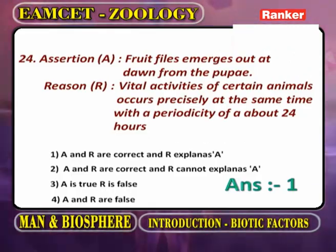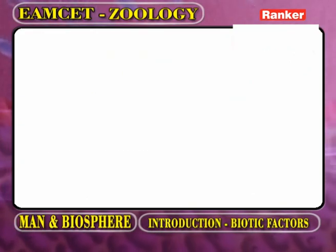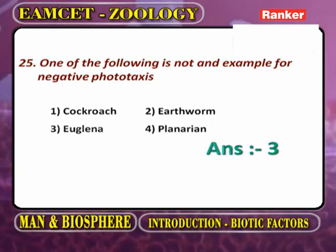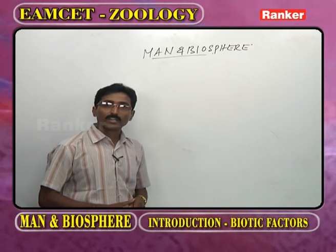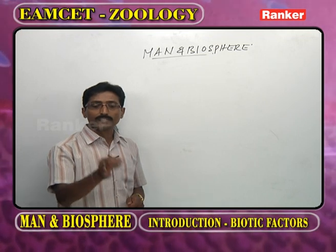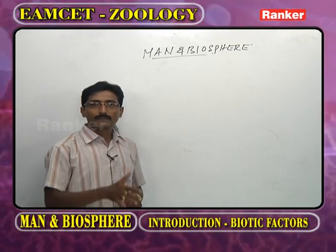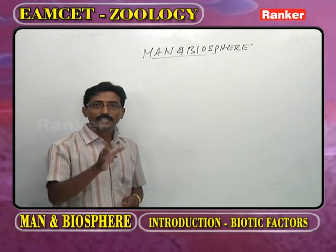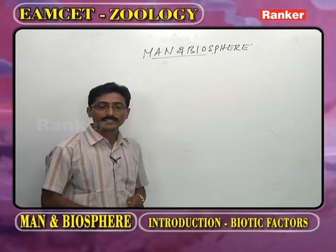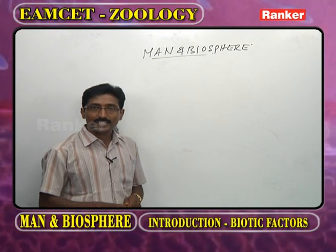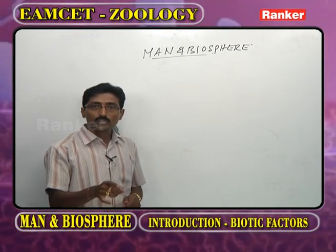The reason states that vital activities of certain animals occur precisely at the same time with a periodicity of about 24 hours. Both assertion and reason are correct and the reason explains. Regarding negative phototaxis: negative phototaxis means the animal moves away from light. Cockroach, earthworm, and Planaria exhibit negative phototaxis. Euglena moves towards light - positive phototaxis - so Euglena is not an example of negative phototaxis.